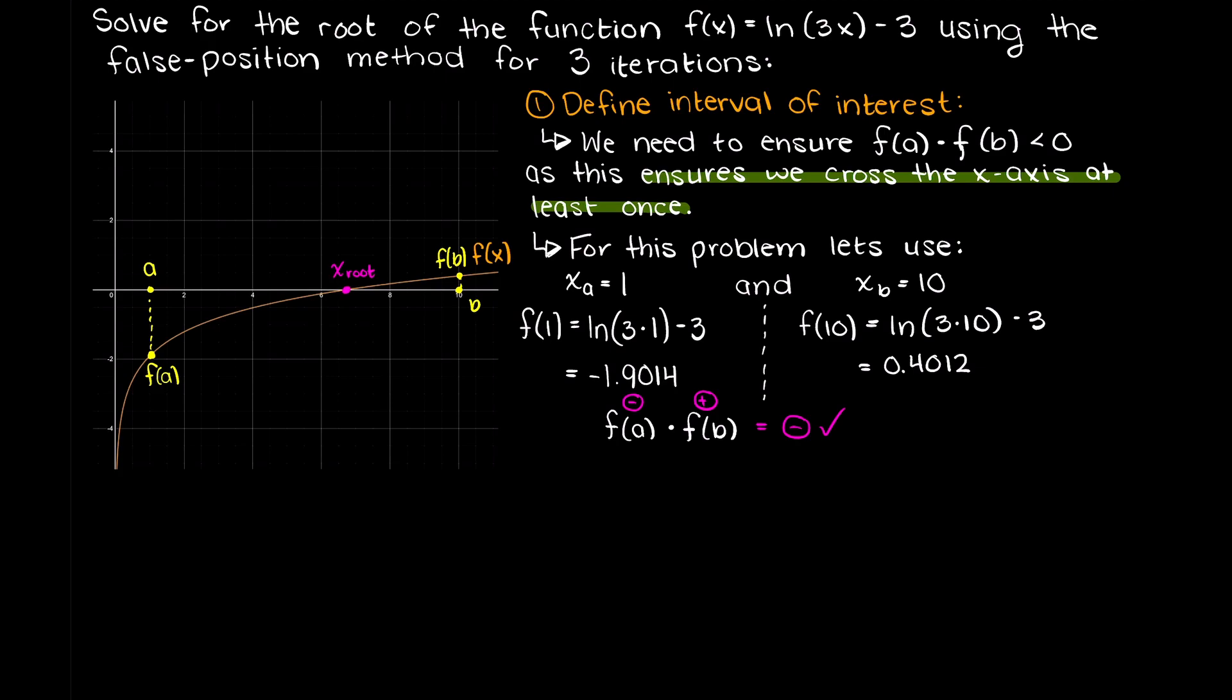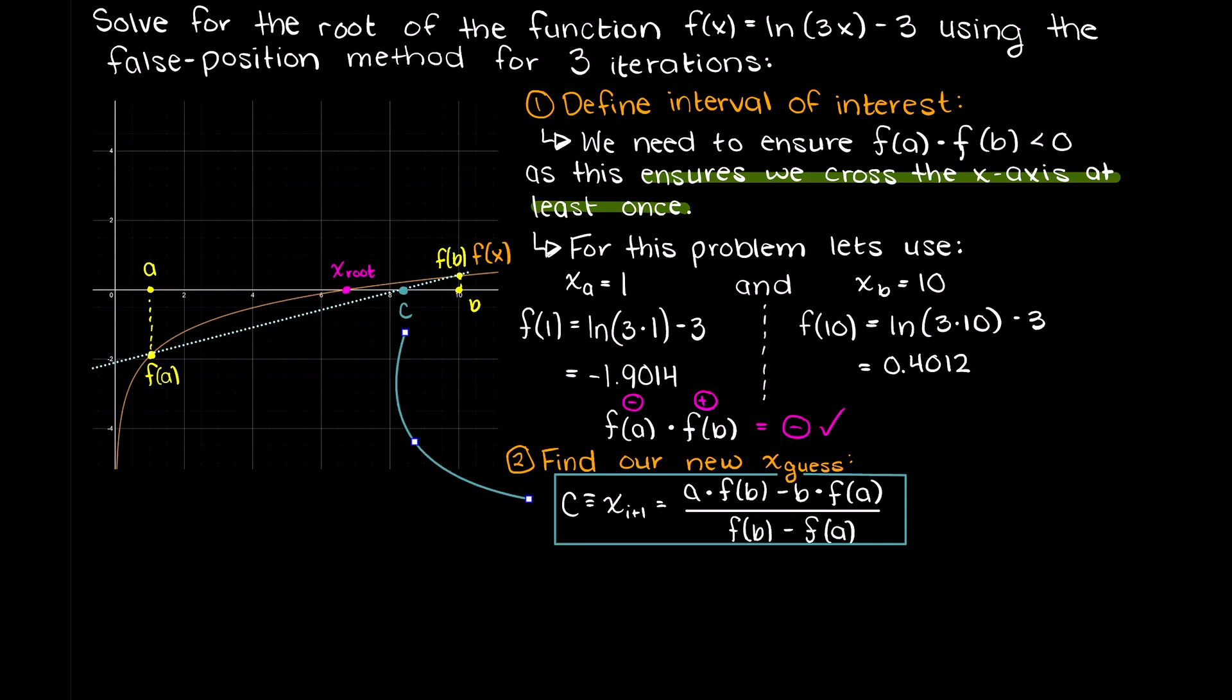So, all iterations using the false position method will follow this structure: Determine a, b, and their outputs. Use the following formula to find where our secant line crosses the x-axis, then we will find out where our output of c lies. Multiply that by our lower or upper root boundary outputs, and that will tell us if we need to move to the left or the right of c. Then, in the next iteration, we replace the value of either a or b with this c input value, and through this we close in on a root of interest.